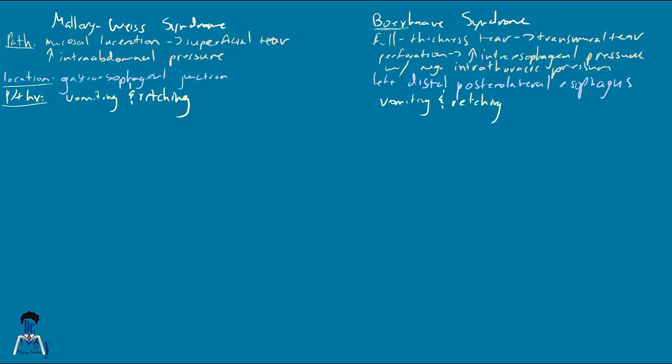If there's an injury to the esophagus caused by some other means, you can't call it Boerhaave syndrome — it's just an esophageal perforation. Something that might show up on exam: it used to be thought that every patient with a Mallory-Weiss tear also had a hiatal hernia, but this is no longer the case. However, if you see hiatal hernia on an exam, definitely think of Mallory-Weiss.